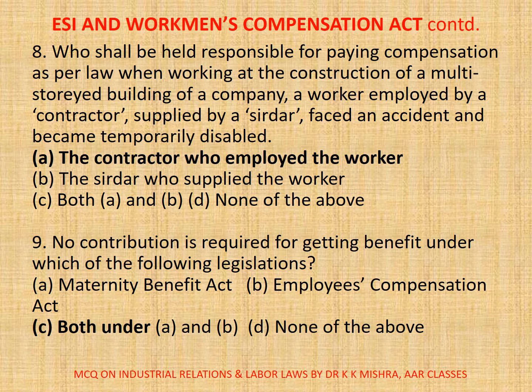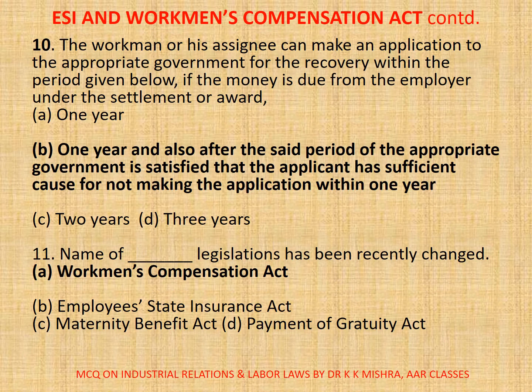Question 9/10. The workman or his assignee can make an application to the appropriate government for recovery within the period given below, if the money is due from the employer under the settlement or award. A. One year; B. One year, and also after the set period if the appropriate government is satisfied that the applicant has sufficient cause for not making the application within one year; C. Two years; D. Three years. Correct option is B.